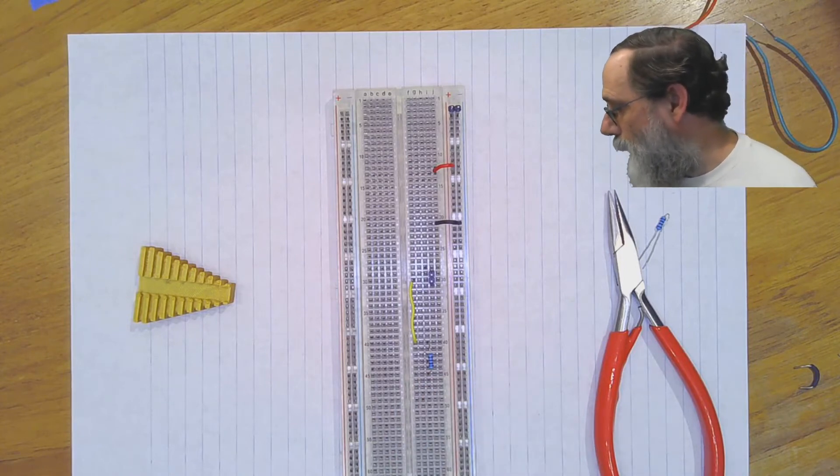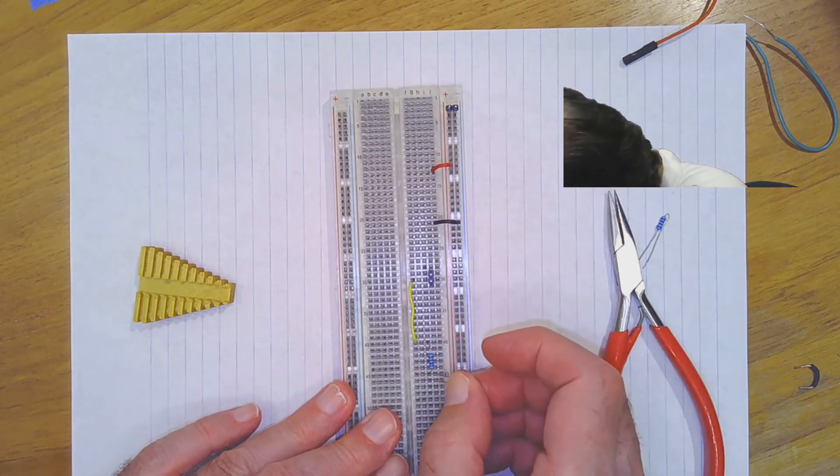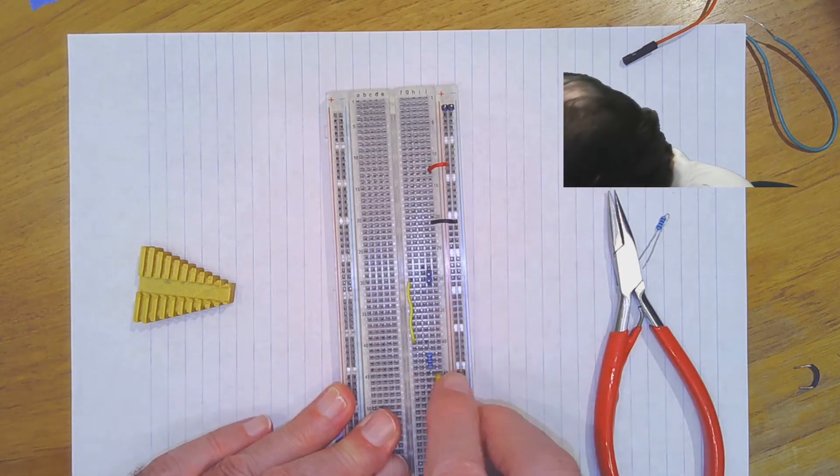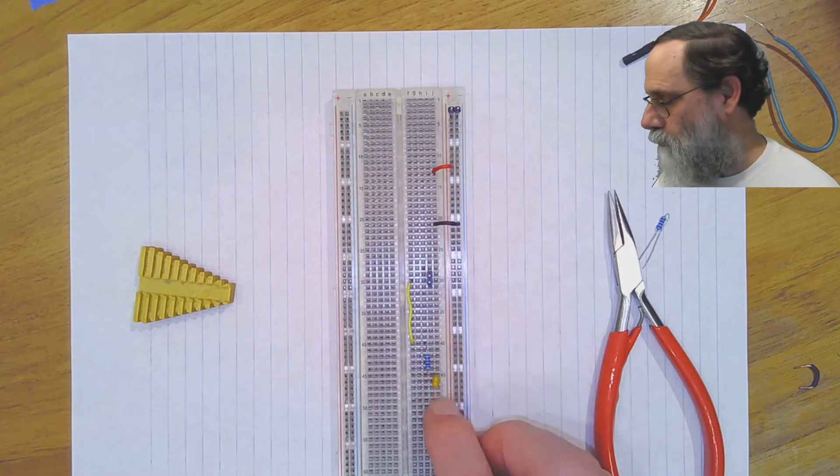And when you're doing capacitors, same sort of deal. If I wanted a resistor and capacitor in series, I could stick the capacitor in, connecting the next row here.